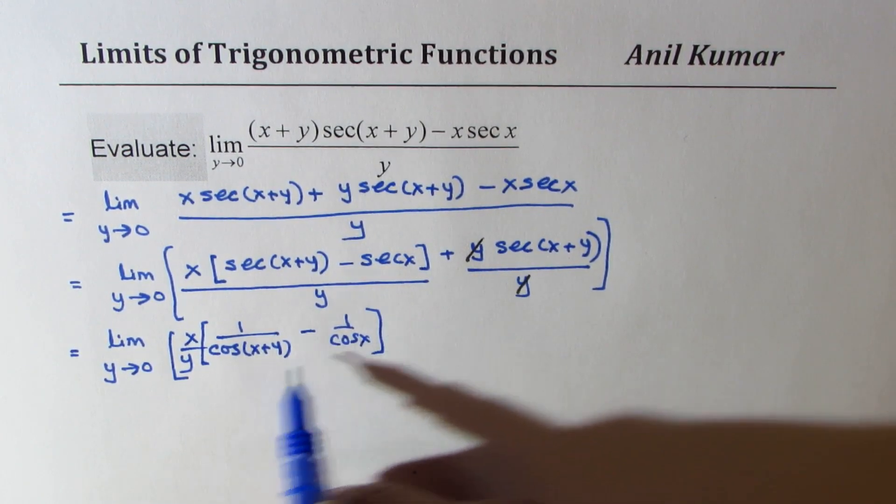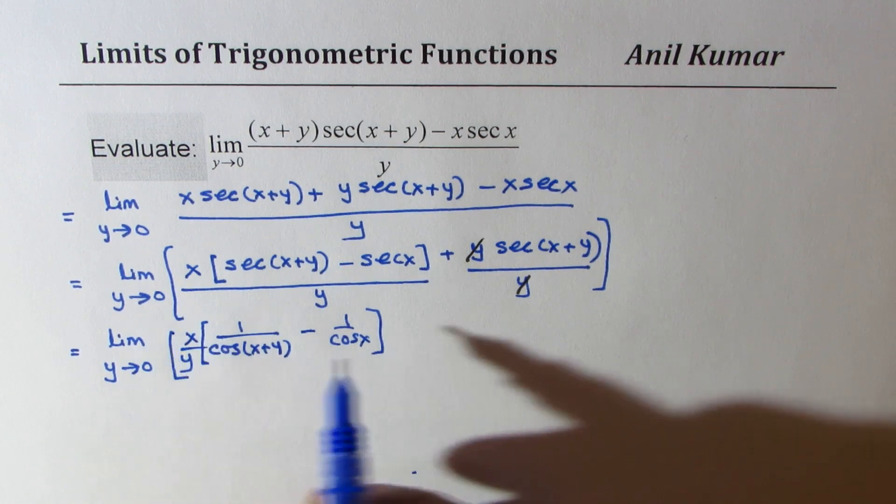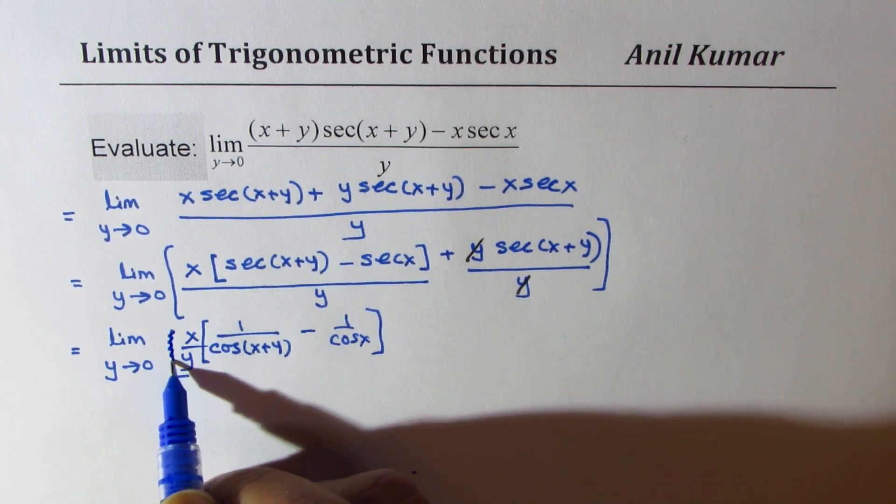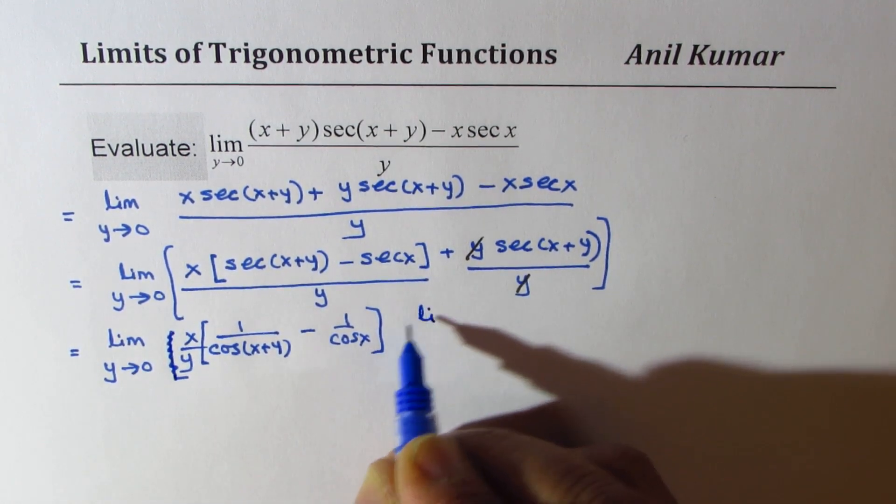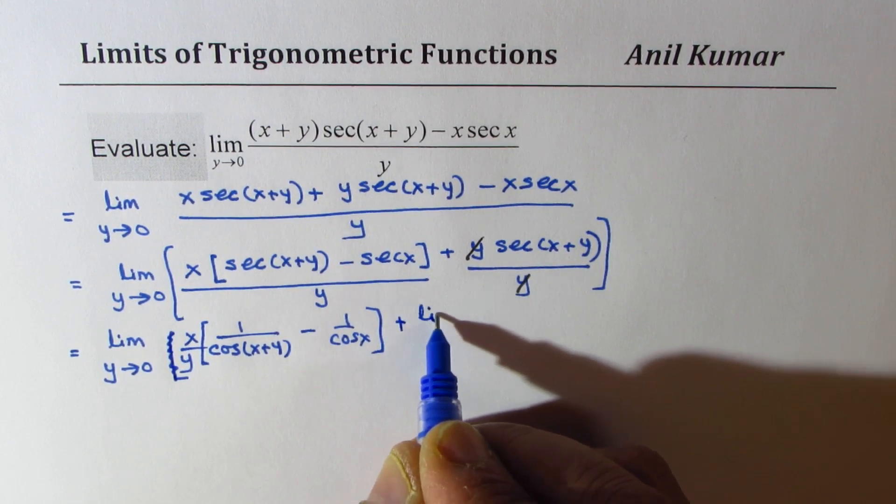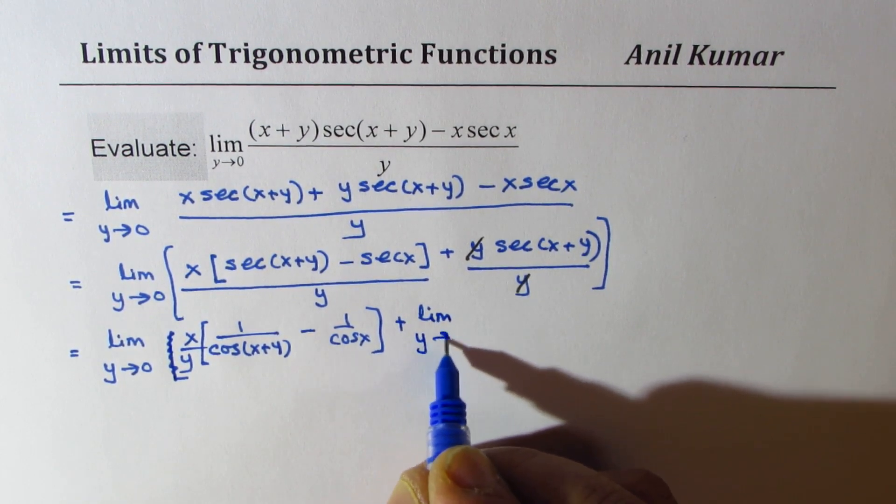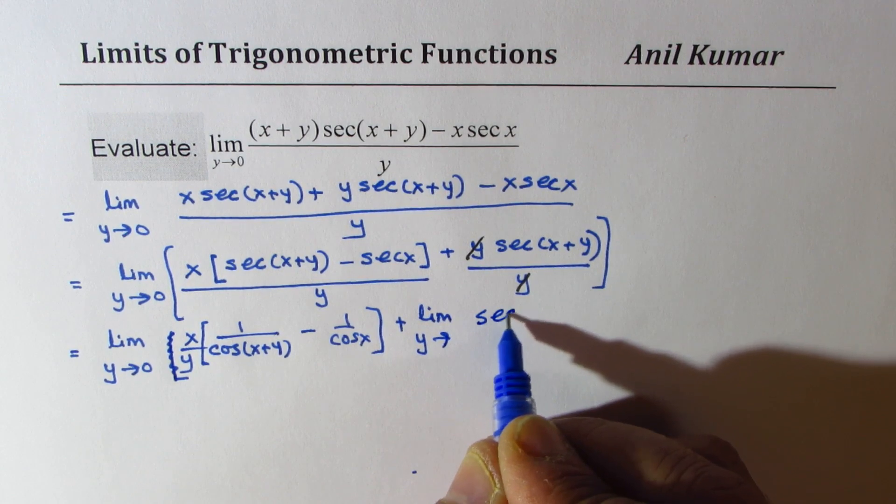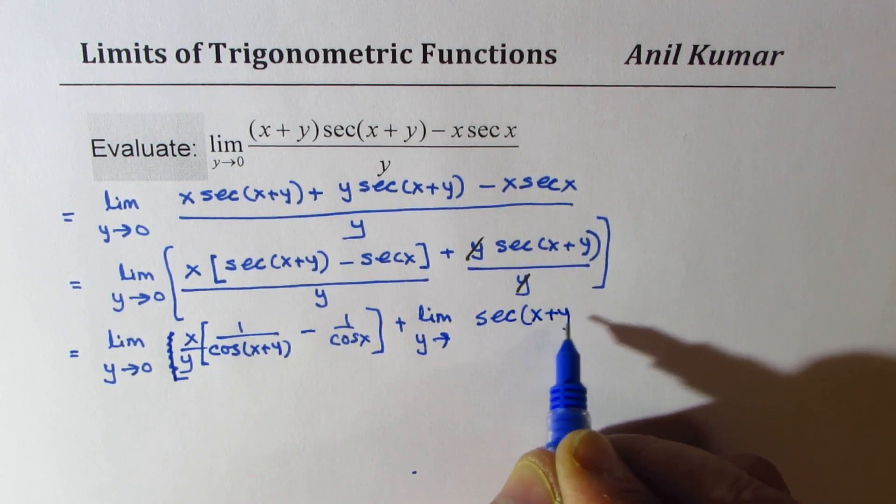We'll write limit plus limit y approaches 0 for secant x plus y. So I hope this step is clear.